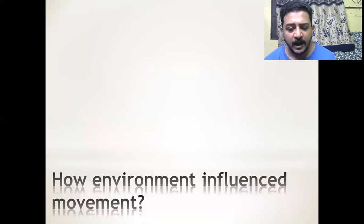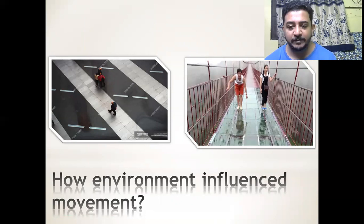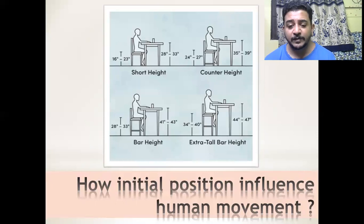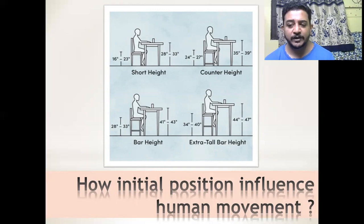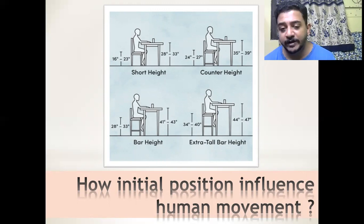How environment influences movement was a major question. A classical example is people walking over a plane surface — when they walk on a surface they perceive as slightly dangerous, their walking pattern changes. How initial position influences movement is another question. A simple example is sit-to-stand: the height of the table, thigh support, body positioning, angulation, whether you have a hand rest or not — all these influence movement. From different heights, you find different difficulty levels.